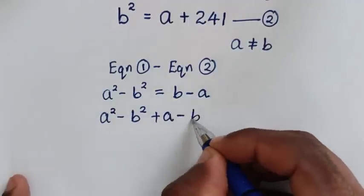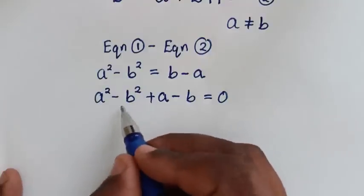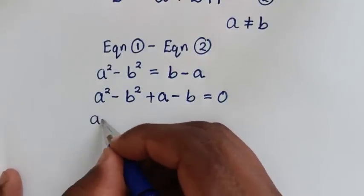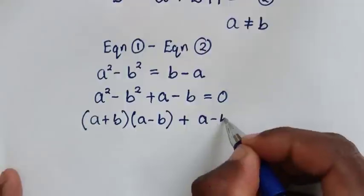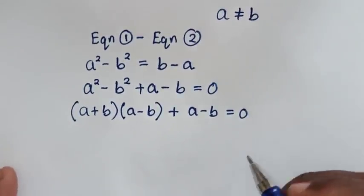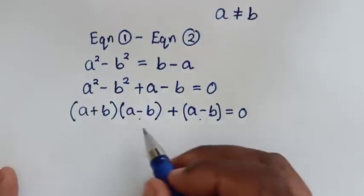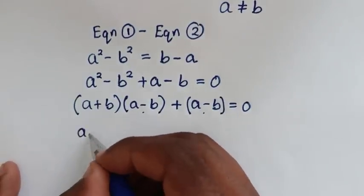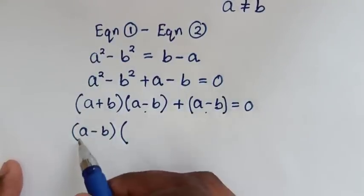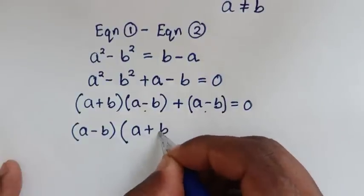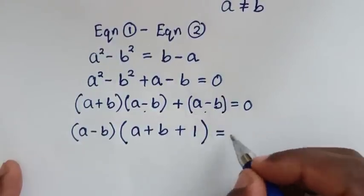So we have a squared minus b squared plus a minus b equals 0. The expression a squared minus b squared is a difference of squares, so it factors as (a plus b)(a minus b). This gives us (a plus b)(a minus b) plus (a minus b) equals 0. Since (a minus b) is common, we factor it out: (a minus b) times (a plus b + 1) equals 0.